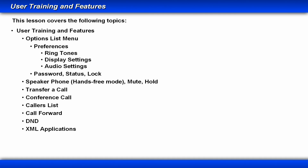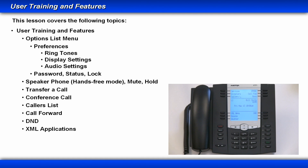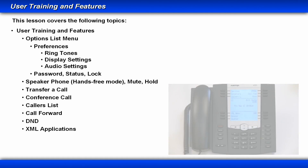I'll demonstrate the following features: how to activate the speakerphone, the Mute and Hold buttons, and what they look like on the LCD screen. I'll transfer a call, make a conference call, access the Callers list, demonstrate Call Forward, Do Not Disturb, and access an XML application. In this lesson, I'll use the 6757i to demonstrate the functionality of the 6735, 37, 55, and 57i phones.